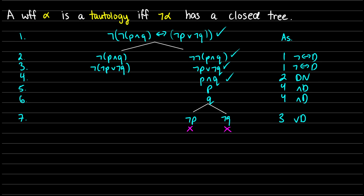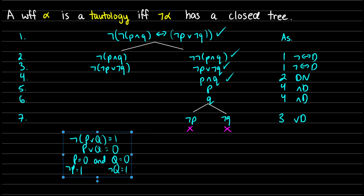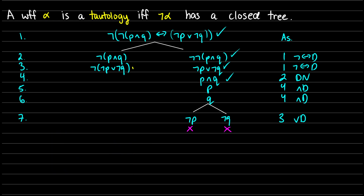Our right side's done. Now we have to do our left side. We have a choice: we can do 'not-p and q' first, or 'not-(not-p or not-q)' first. Now if we have 'not-(p or q)' being true, this means p or q is false, which means p is false and q is false, which is the same as saying not-p and not-q are both true. So we don't have to take branching paths if we do not-or decomposition first.